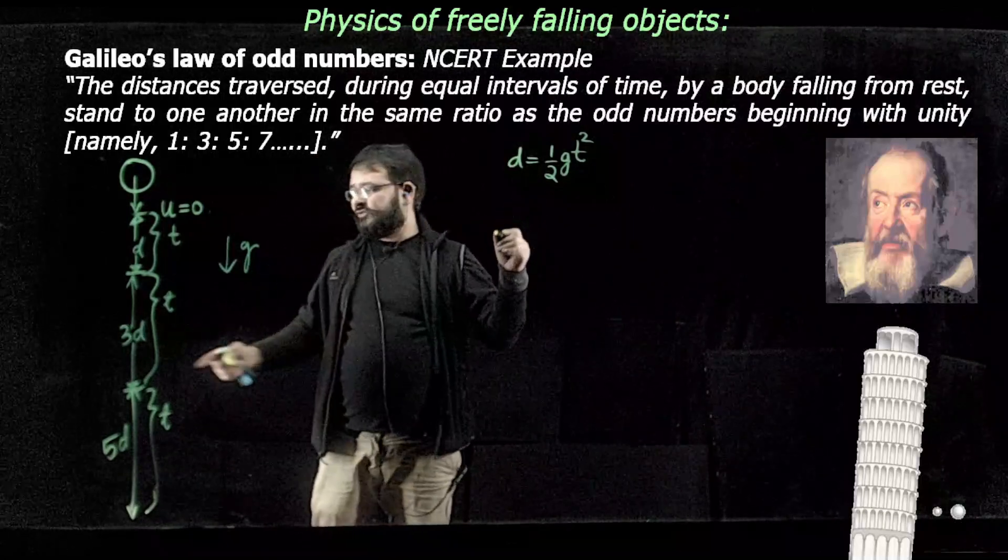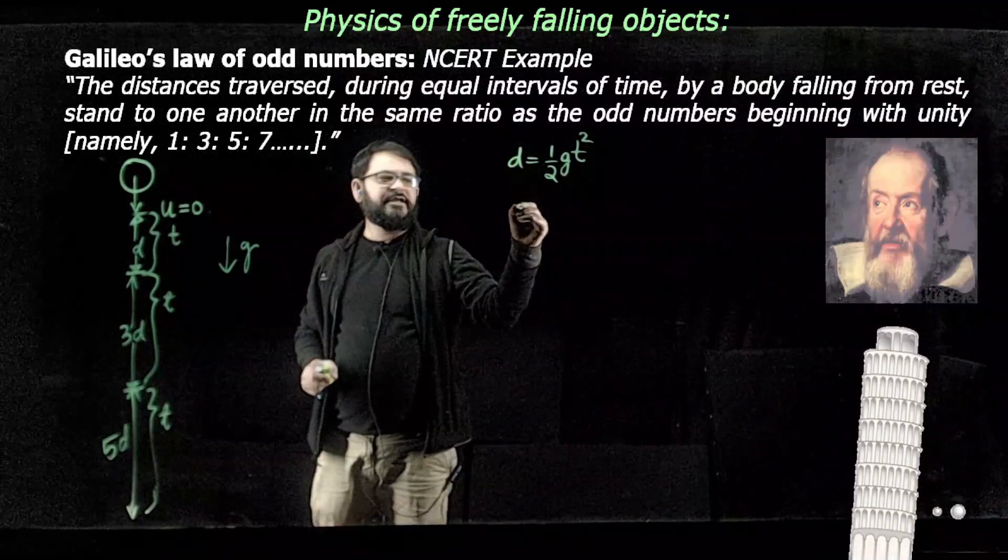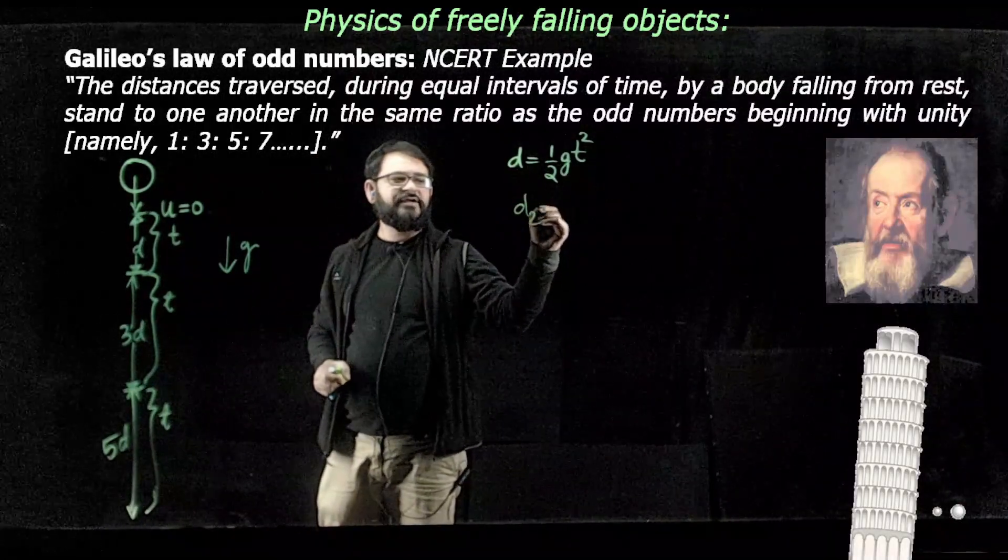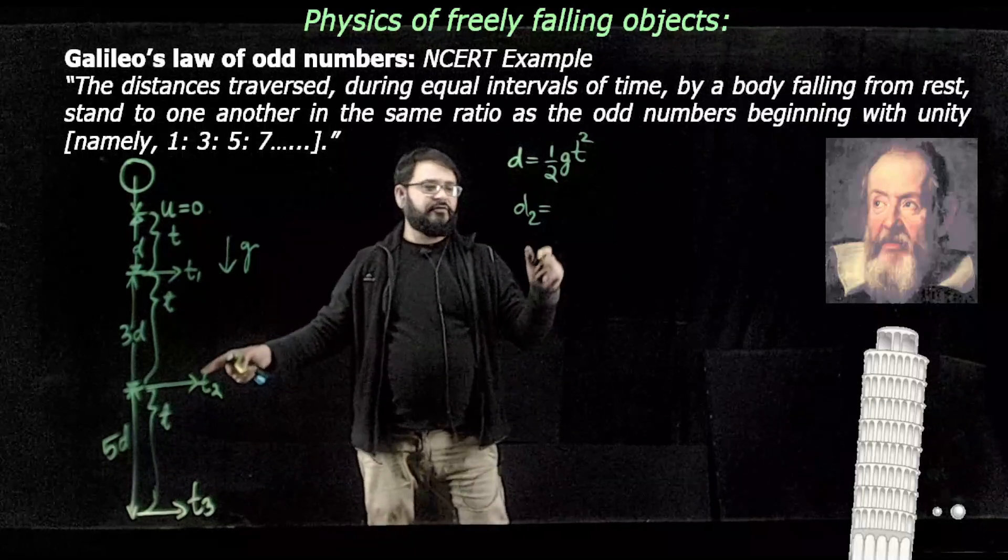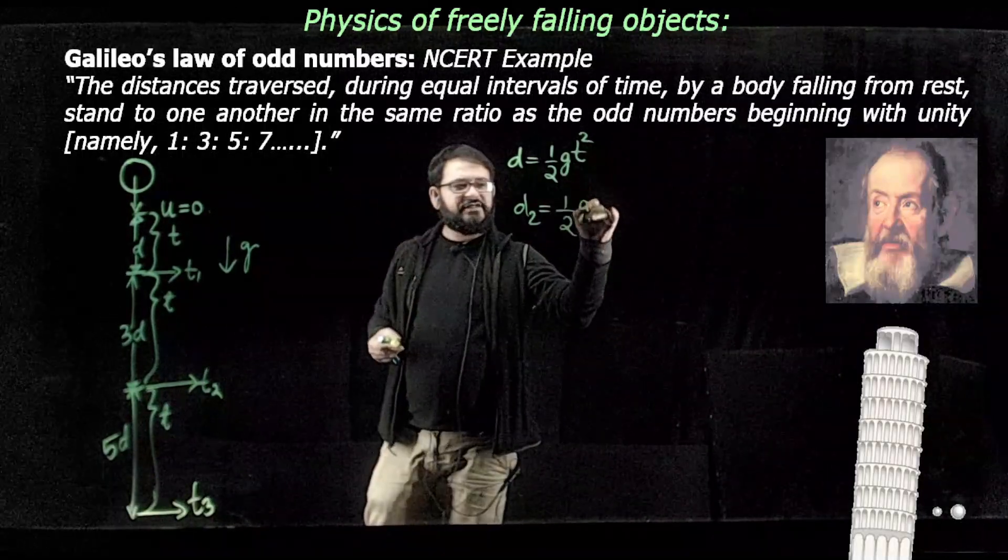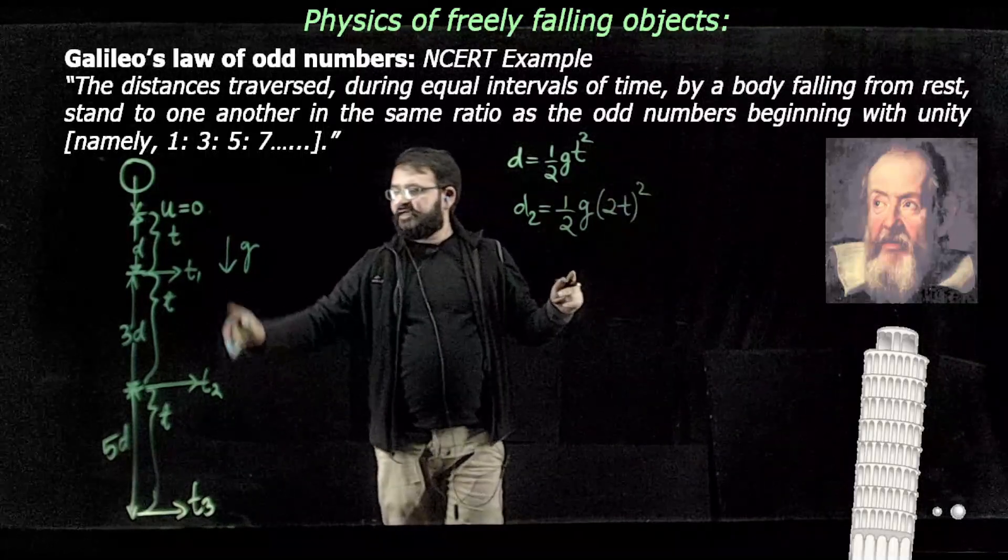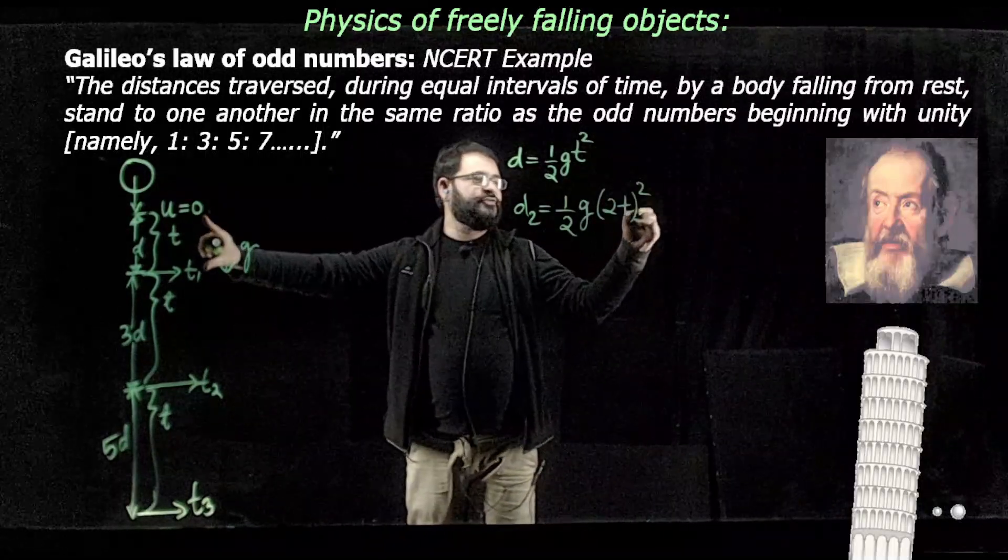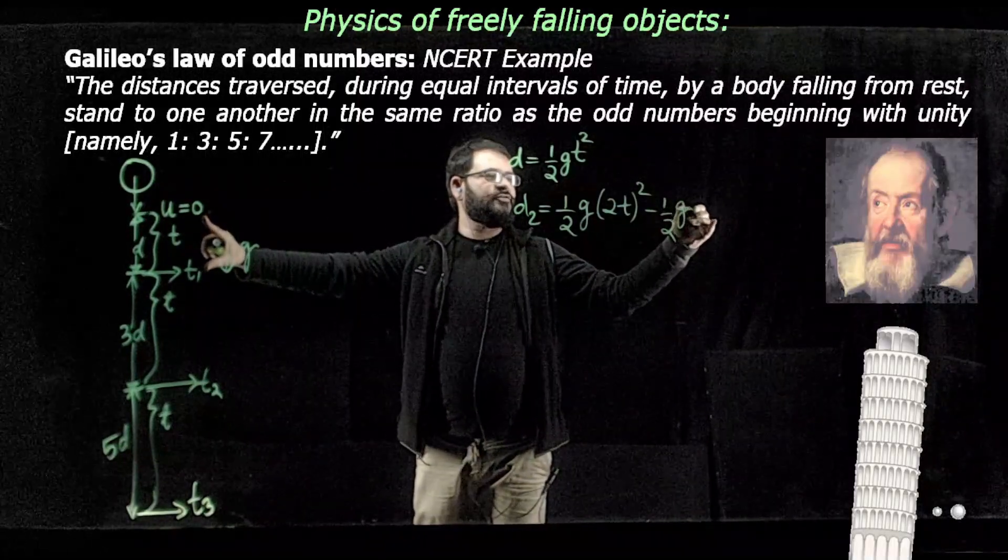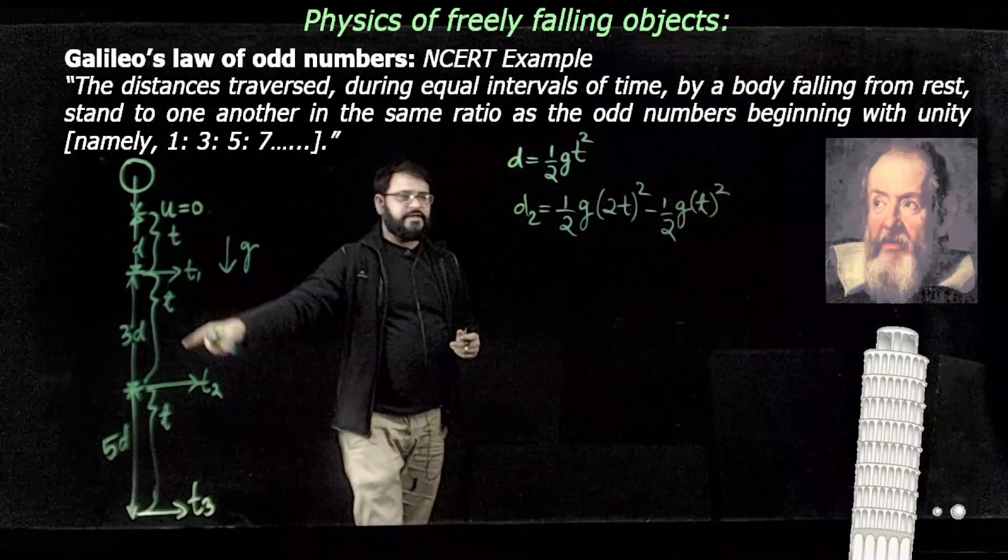Similarly, for the next interval of time, the distance in the second interval can be written as half g times 2T squared minus the distance traversed during the first interval, right? So we can determine the distance traversed during the second interval.